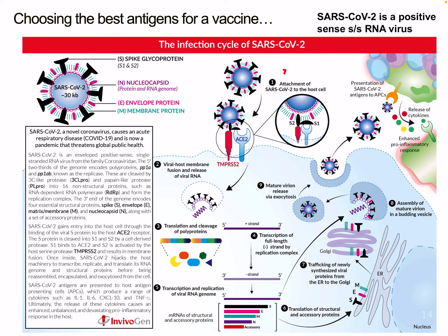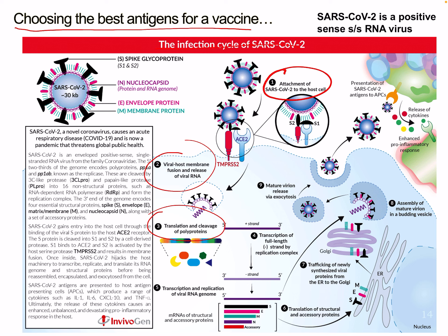These are all different areas where we can try to stop the virus. Understanding the infection cycle of SARS-CoV-2 also allows us to choose the best antigens for vaccines. The cycle includes: attachment to the host cell membrane, viral-host membrane fusion, release of viral RNA, translation and cleavage of polyproteins, transcription of the viral genome, translation of structural and accessory proteins, trafficking of viral proteins to the endoplasmic reticulum and Golgi apparatus, assembly of the mature virion, budding in a budding vesicle, and release of mature virions to affect further cells.